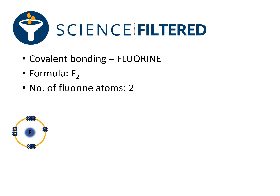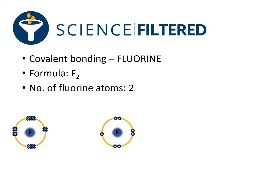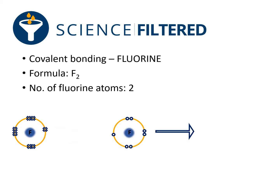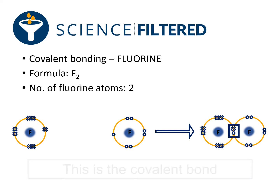Here is my first fluorine atom on the left and I've drawn another fluorine atom on the right. I can see that there are two electrons on their own, so I need to buddy them up like so. What's going to happen is I'm going to end up with a fluorine molecule with a shared pair of electrons in the middle after they've been buddied up, and that is my covalent bond.